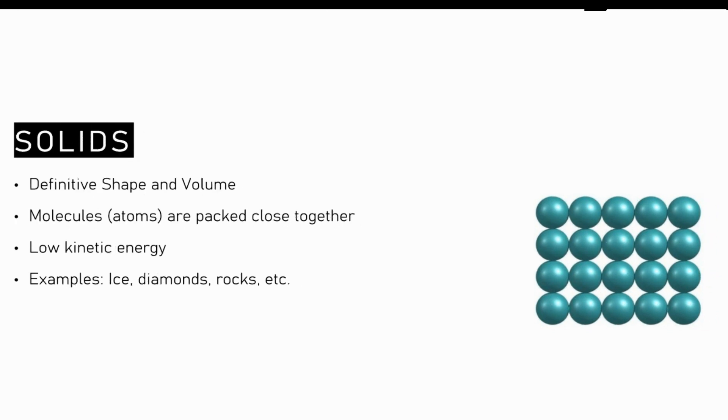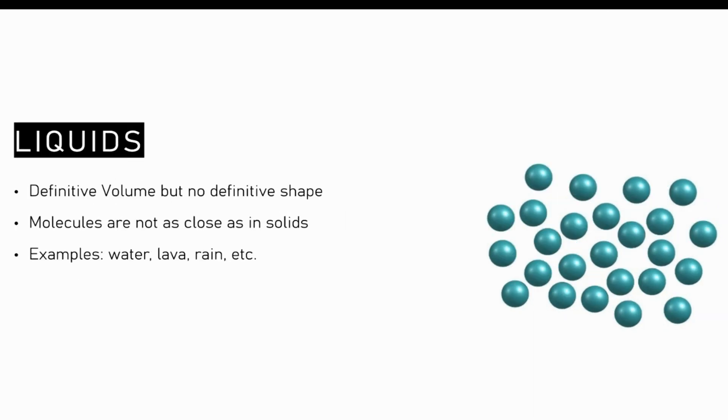Moving on to liquids. Liquids have a definite volume but not a definite shape, meaning that they tend to take the shape of whatever container they are placed in, but the volume will remain the same. The molecules in liquids are closely packed but not as much as in solids. These molecules also move freely. Examples of liquids include water, lava, rain, etc.